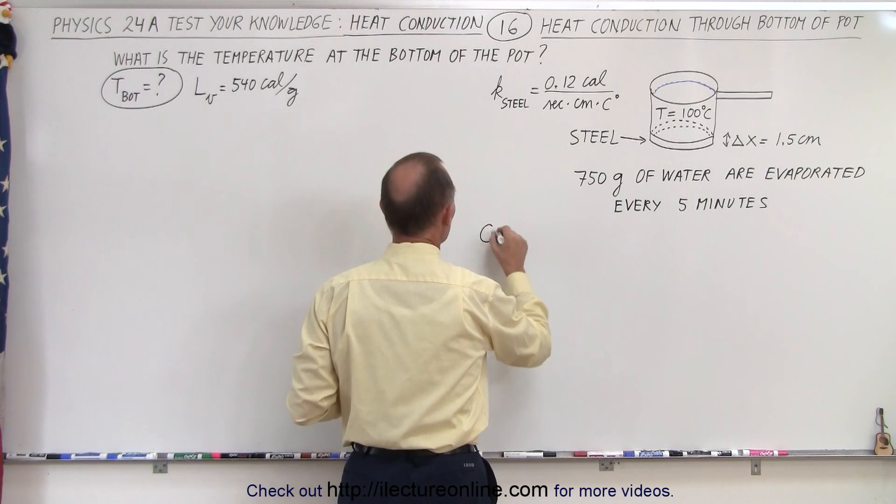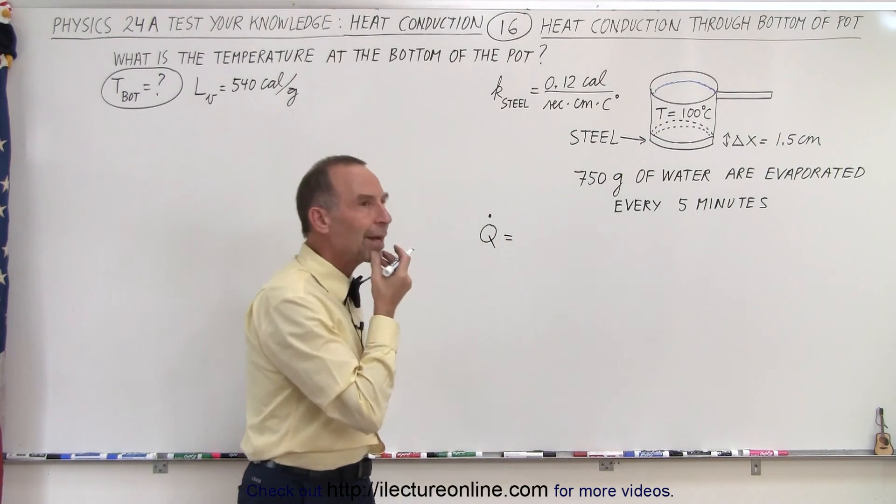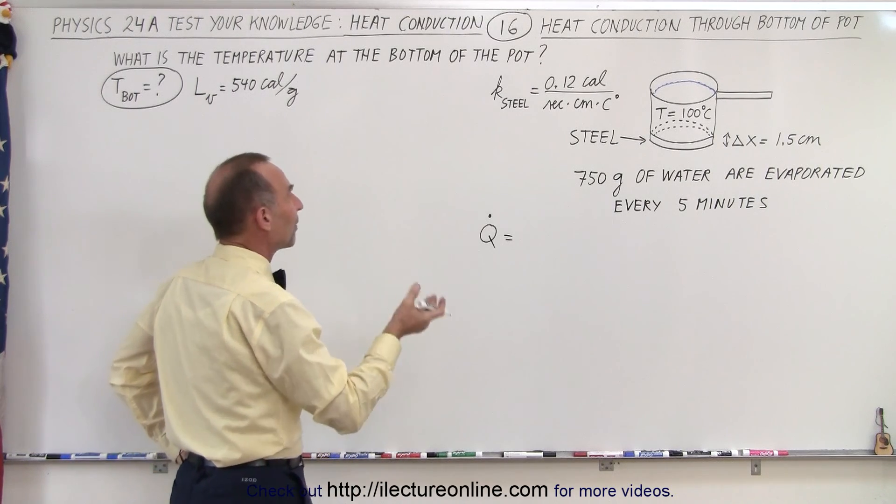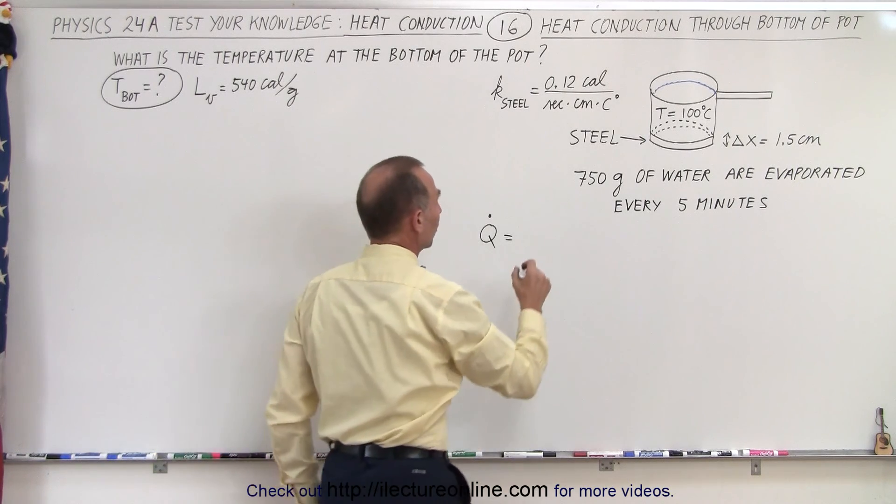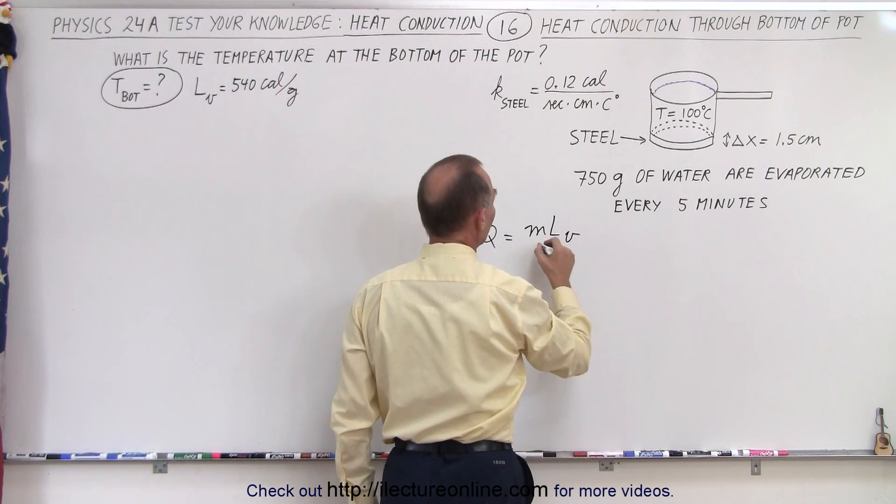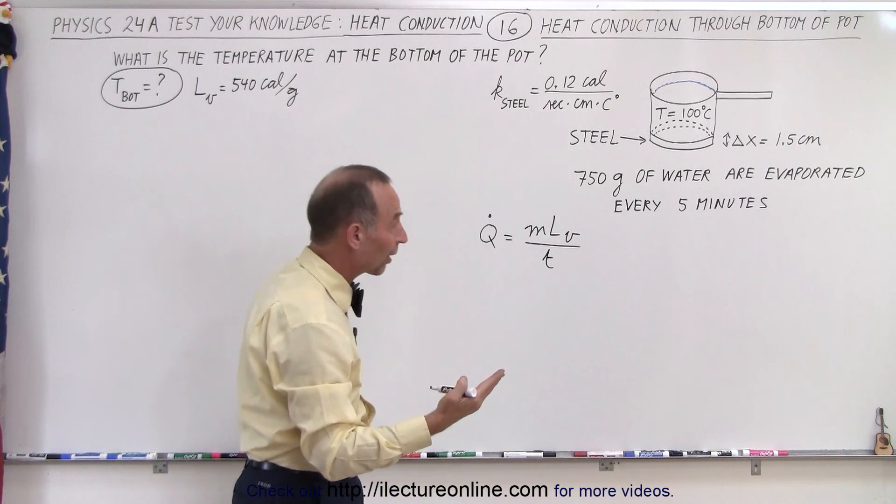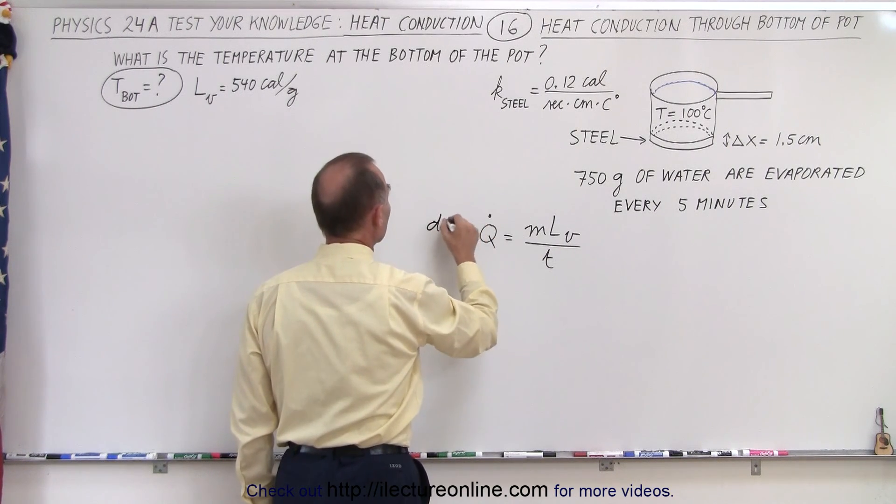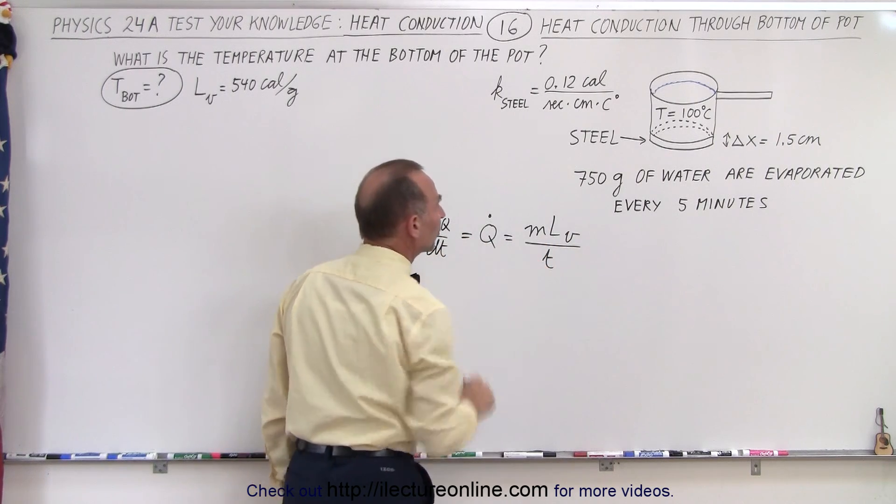So that means we need the heat flow Q. And of course, that would be equal to the amount of heat required to vaporize 750 grams of water. So we have the latent heat of vaporization. That means that the mass times the latent heat of vaporization divided by the time, because it's the amount of heat required per unit time Q is dQ/dt.